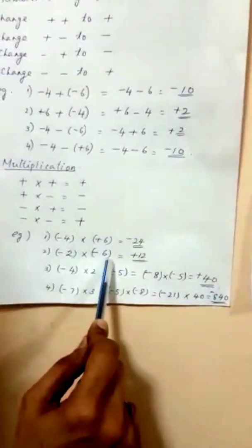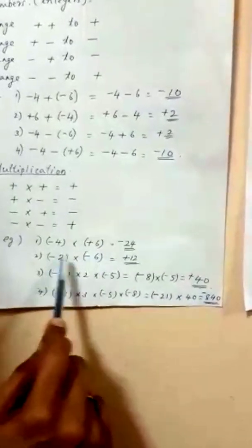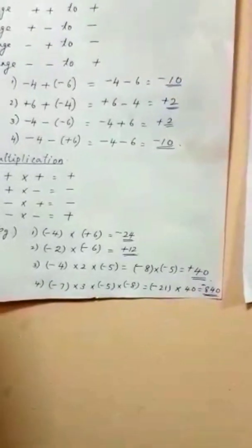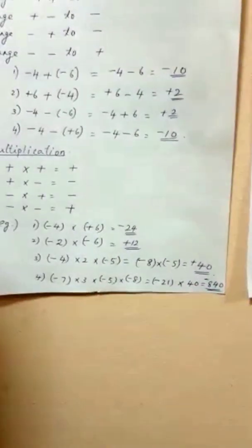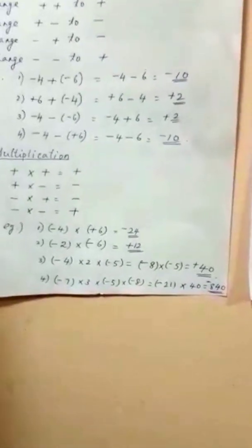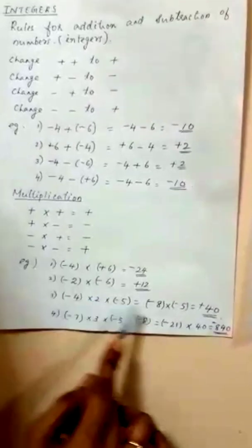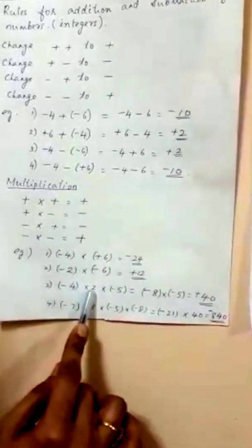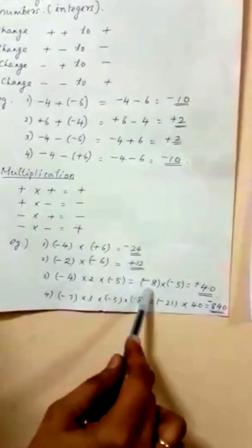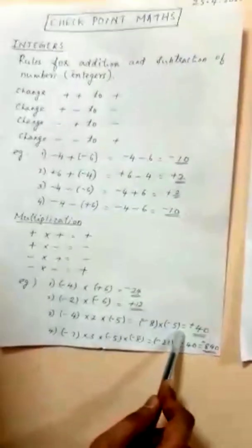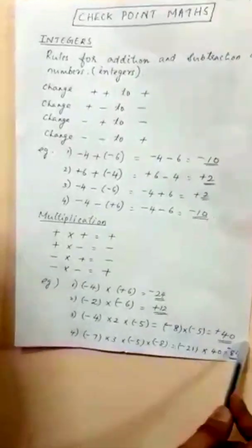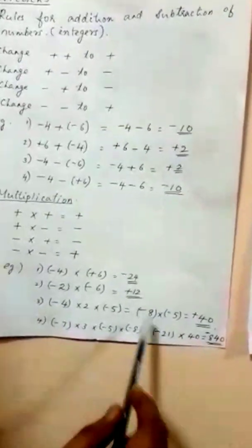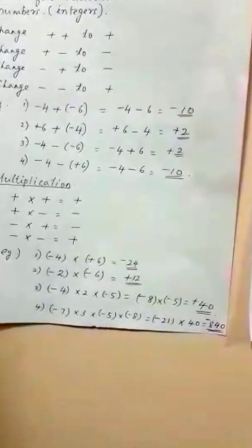Second example: minus 2 times minus 6 — 2 times 6 is 12, same sign, so the answer is plus 12. For three numbers — minus 4 times 2 times minus 5 — first multiply minus 4 times 2: opposite sign, answer is minus 8. Then minus 8 times minus 5: same sign, answer is plus 40.